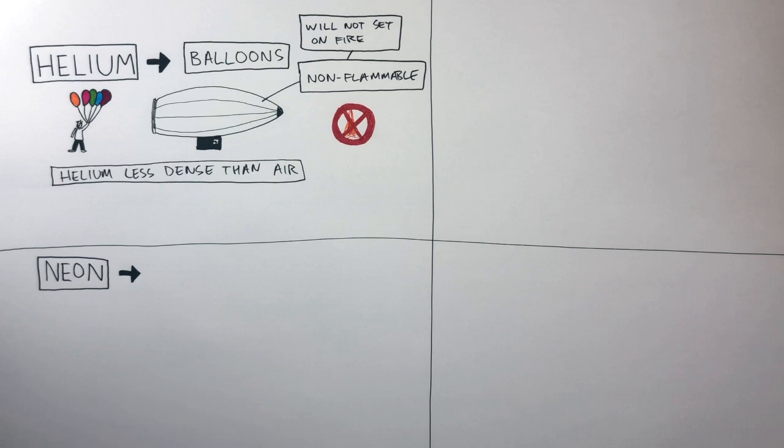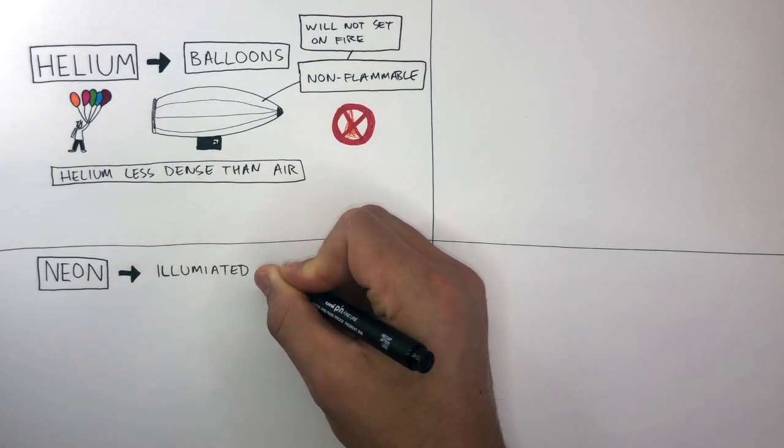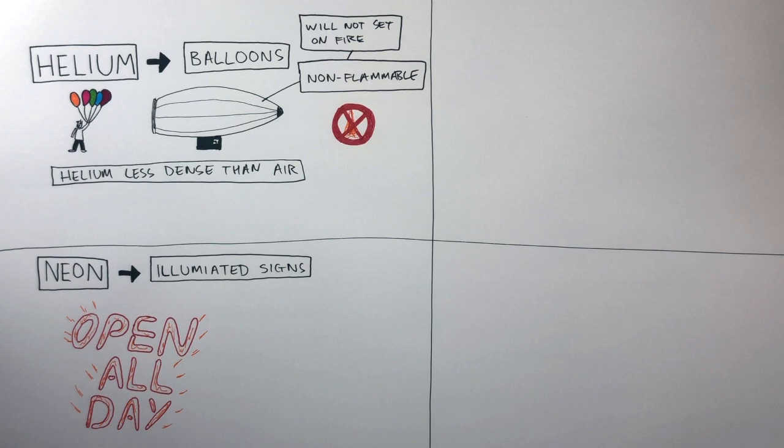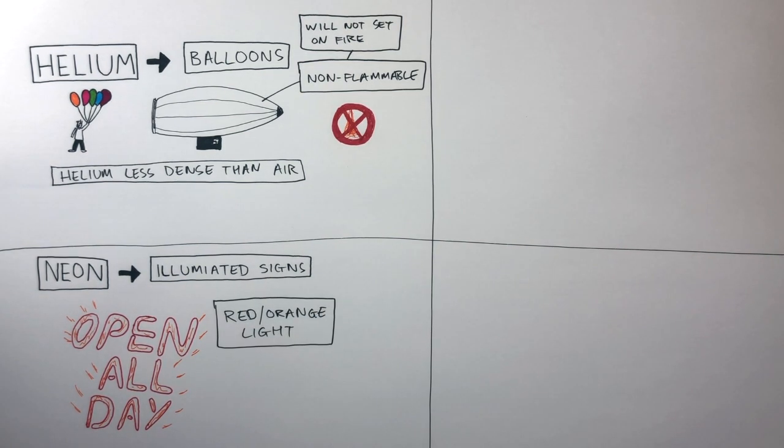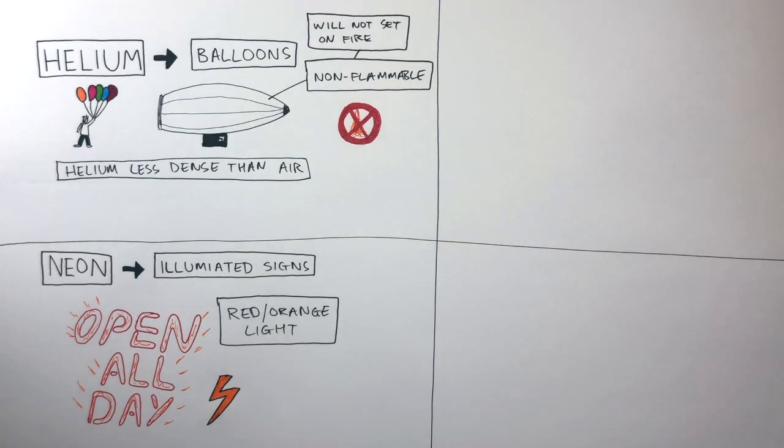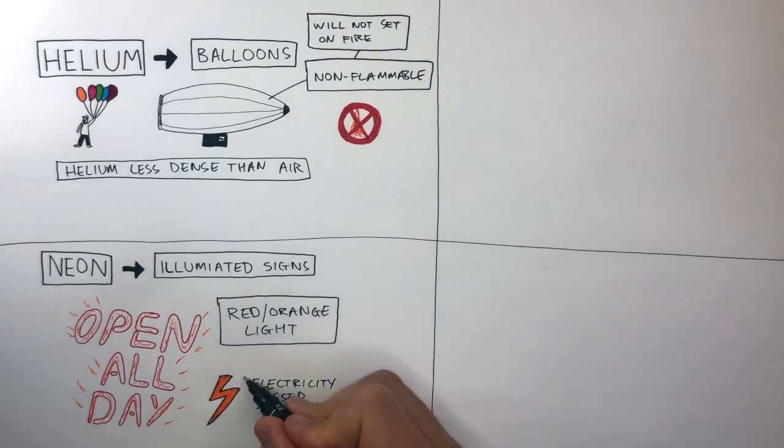Neon is the second element in Group Zero, and is used in illuminated signs. You may have heard the term neon lights before, and it's these characteristic bright red-orange lights that you see on the top of shops or on signs. Neon emits bright red-orange light when electricity is passed through the gas.